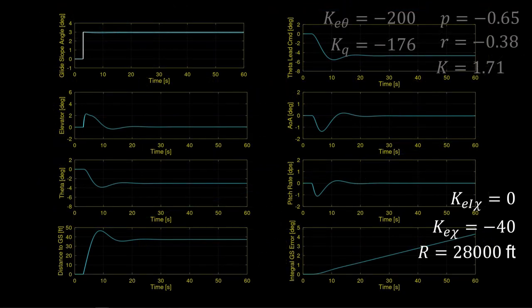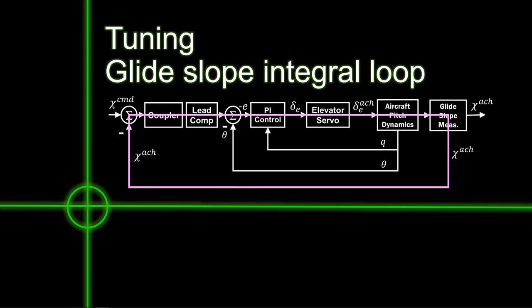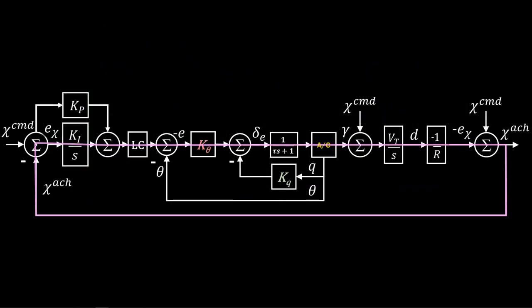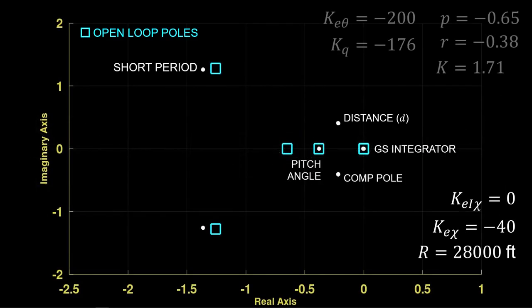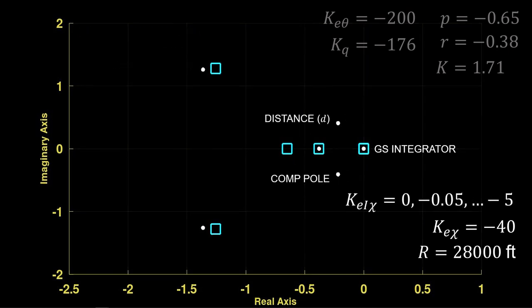We now look at the integral loop in detail. Decreasing integral error gain, we see a clear trade-off. The glide slope integrator moves leftward, which will work to eliminate steady-state glide slope error. However, simultaneously, the normal distance D and the compensator pole move rightward, decreasing stability and progressively losing damping.